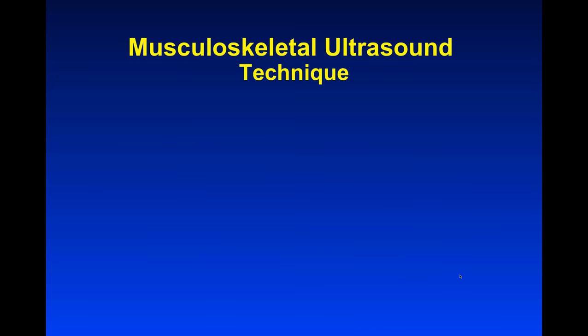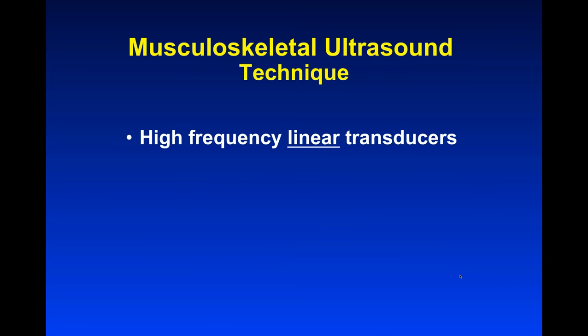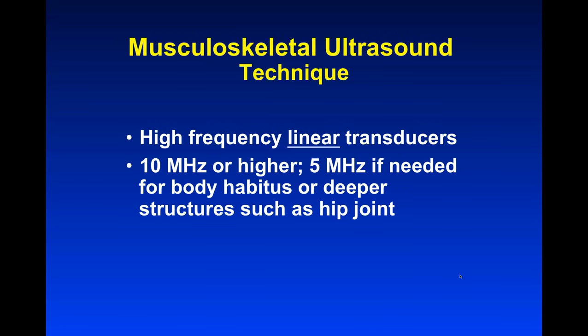Technique is critical in MSK ultrasound. We want to use generally high-frequency linear transducers — 10 megahertz or higher, usually 12 to 15 megahertz. However, if we need better penetration because of a large body habitus or a deeper structure such as the hip joint, we will go down to a 5 megahertz curved linear probe. For tendon or ligament imaging, we really want to stay in the linear zone.